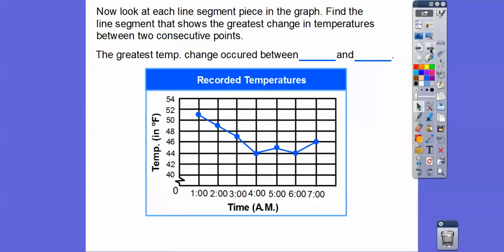And then we can analyze this graph and talk about things. So now look at the line segment piece in the graph. Find the line segment that shows the greatest change in temperature between the two consecutive points. So it's the steepest part, whether it's going up or down. The very steepest part, this looks the same right here. But right here, this looks like it's the steepest right here. In fact, it went down 3 degrees. So the greatest temperature change occurred between 3 o'clock and 4 o'clock right here. In fact, it dropped 3 whole degrees in that little time zone right there.